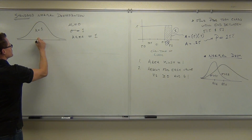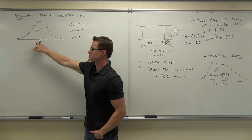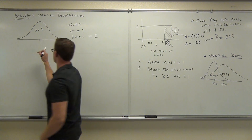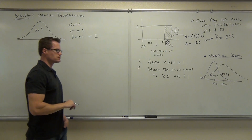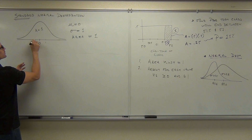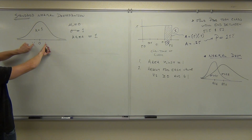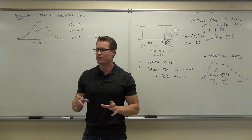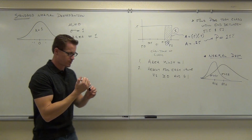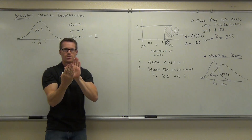The area equals one. The value right here under the peak of the distribution is the mean — the mean is going to be zero. And the standard deviation is equal to one. So what percentage of the data is between these two numbers? This is one standard deviation to the right and one standard deviation to the left of the mean — that means 68% is going to fall within that range of numbers.